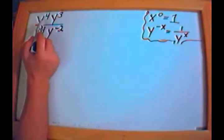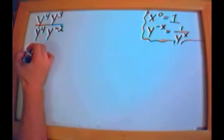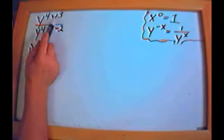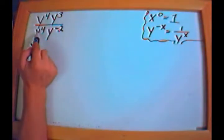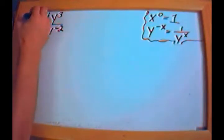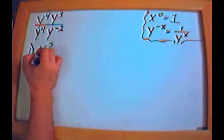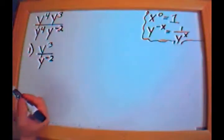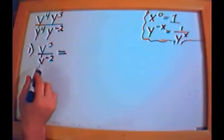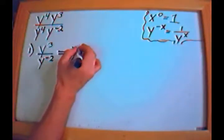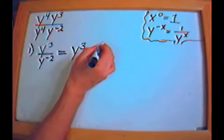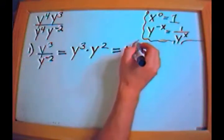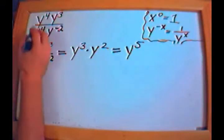Method number one: I have a y to the fourth on the top and a y to the fourth on the bottom, and everything is multiplied together, so I can cancel them immediately. That leaves y to the third over y to the minus 2. Then I move the y to the negative 2 upstairs, making it positive, giving me y cubed times y squared. Since 3 plus 2 is 5, the answer is y to the fifth.